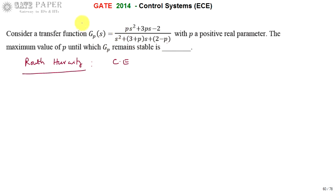For this problem, the transfer function should be taken as a closed-loop transfer function only. Why? Because nothing is specified about the feedback — it has not given anything about the feedback transfer function, whether it is unity feedback or anything else. So this problem assumes the given transfer function already incorporates feedback internally and the result is a closed-loop transfer function, given as Gp(s).